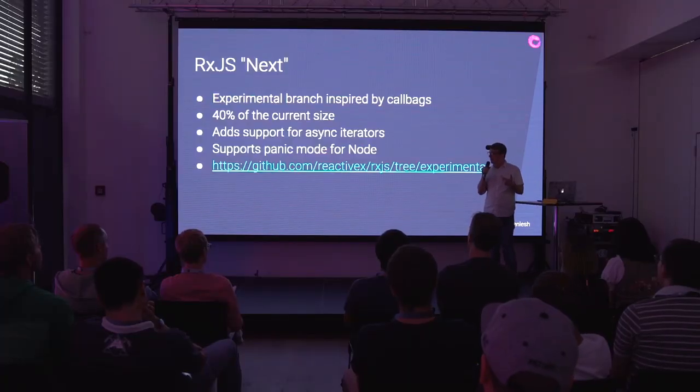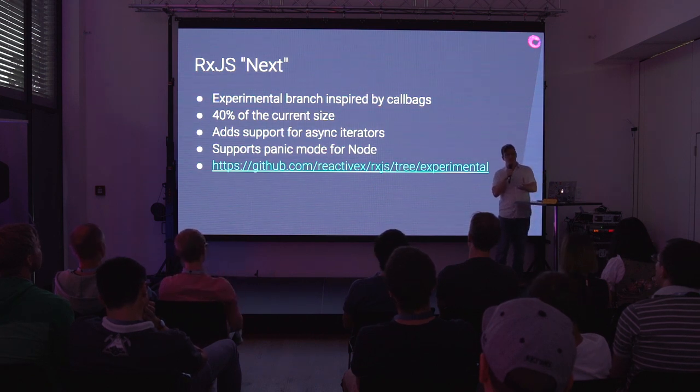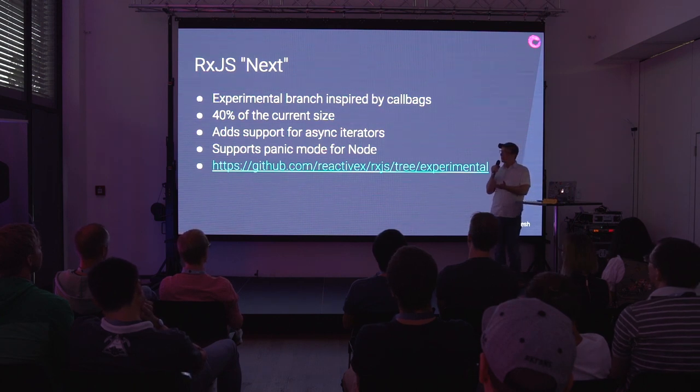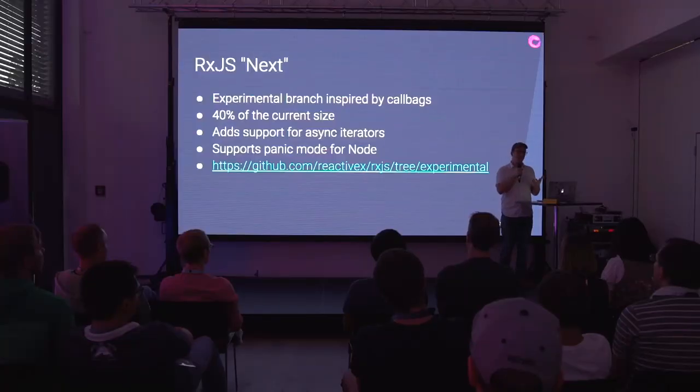It's going to add support for async iterators — the result of async function star — which people will start using a good amount in Node especially. We're also experimenting with panic mode in Node. Generally speaking, Promises and Observables will catch all errors that happen inside of them and send them down a special error path. Folks at Netflix and other Node-heavy development shops would like an unhandled error to immediately cause a panic and kill the process rather than being caught in a try-catch.